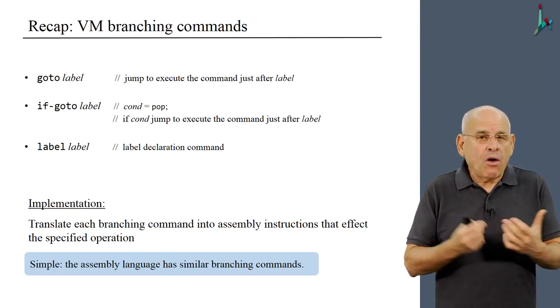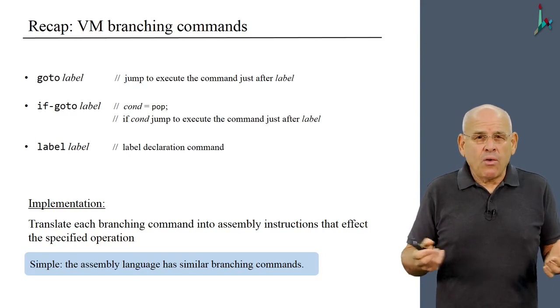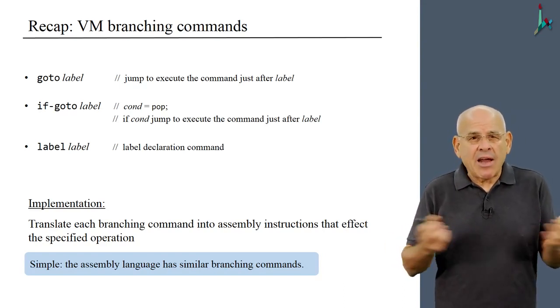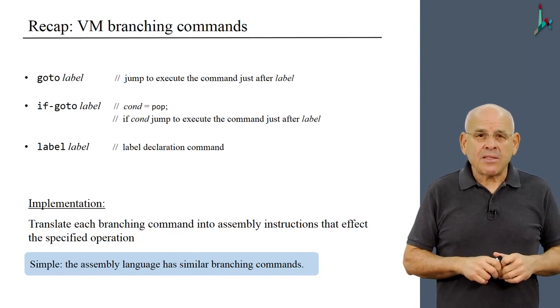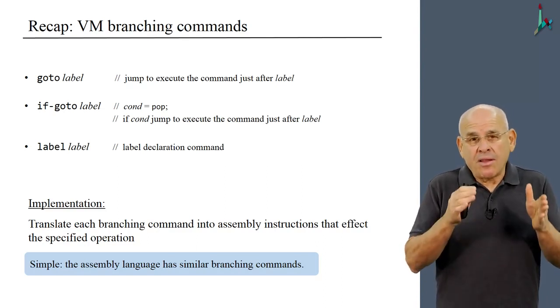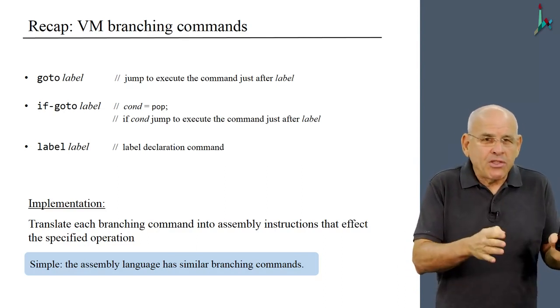Because the assembly language also has goto commands whose flavor and style of execution is almost the same as the goto commands of the VM language. And therefore, the translation in this case of VM branching commands to branching in assembly is a rather simple exercise.